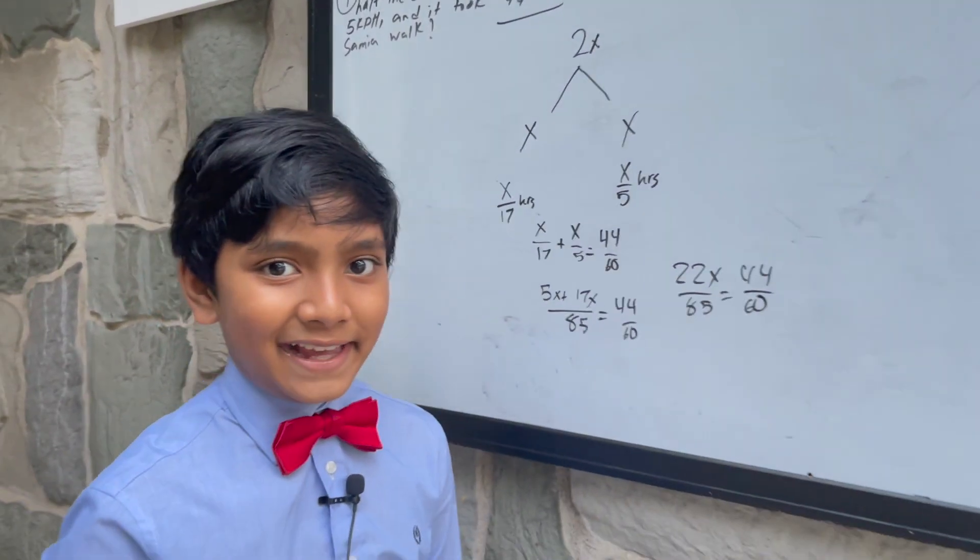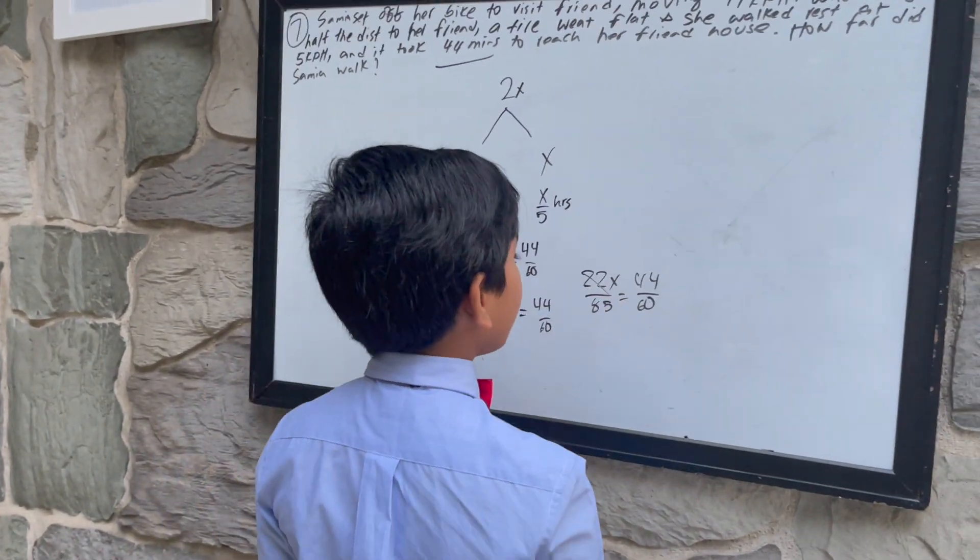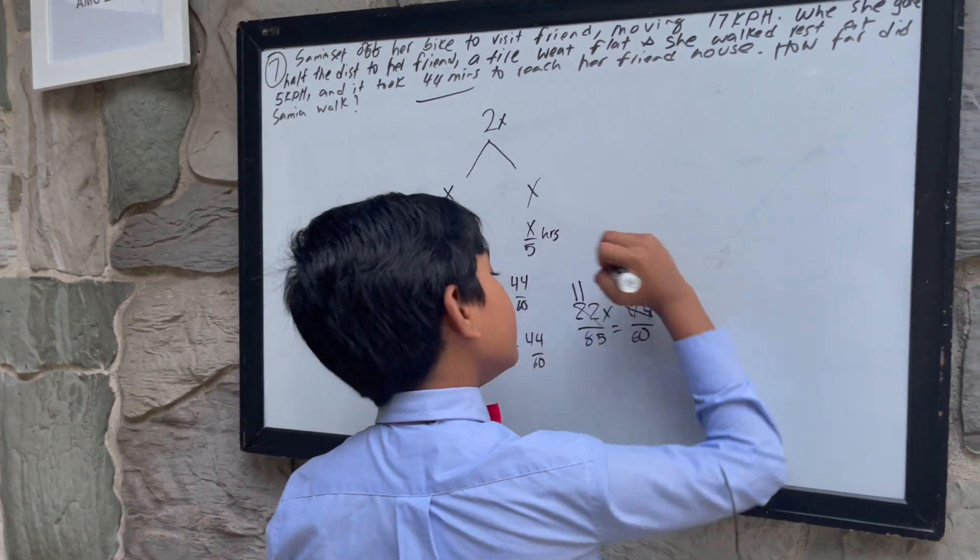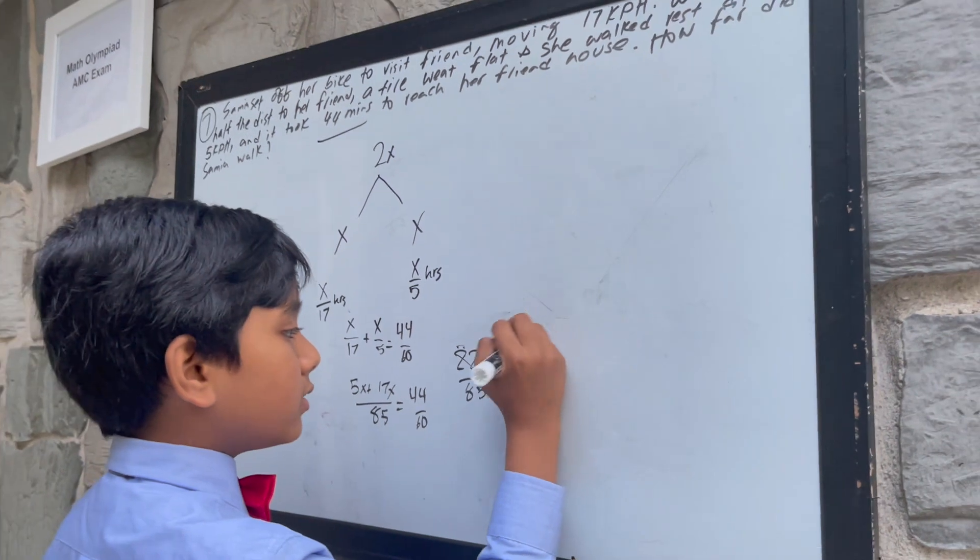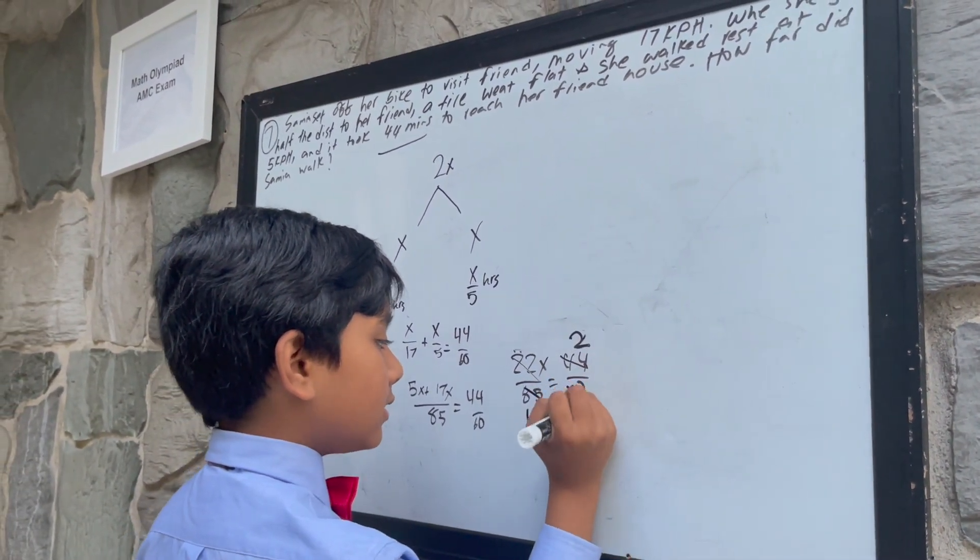Since there are no calculators in the AMC, we can cancel these out. This will give 11, this will give 1, and this will give 2. This will give 17, and this will give 12.